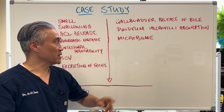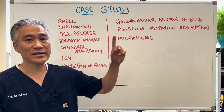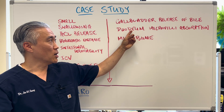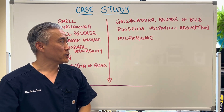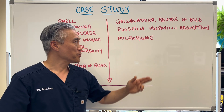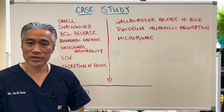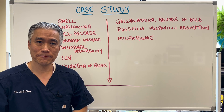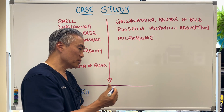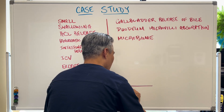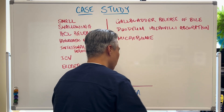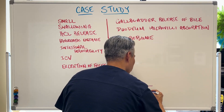Another patient comes in with gallbladder release issues, release of bile problems, duodenum microvilli absorption issues, and gut microbiome issues. When we look at a patient like this, this could probably be metabolic or possibly autoimmune.